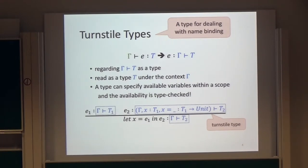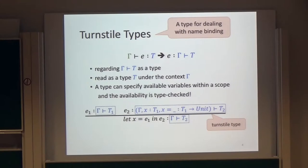Our idea is very simple. Just rewrite the notation: gamma turnstile E colon T. Our new notation is E colon gamma turnstile T. The meaning is the same, but now gamma turnstile T is a type.